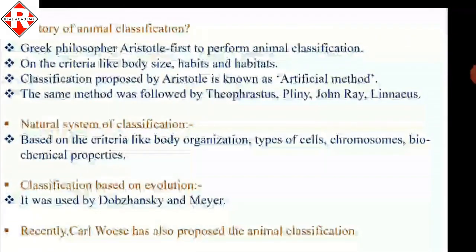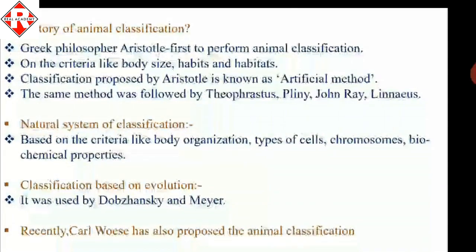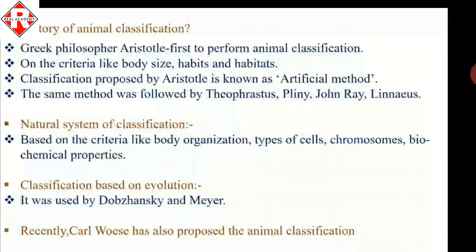Now let's recall the history of animal classification. The first person to classify animals was Aristotle, the great Greek philosopher, who used body size, habits, and habitats as criteria. This is known as the artificial method of classification, also used by Theophrastus, Pliny, John Ray, and Linnaeus. The natural system of classification uses body organization, type of cells, chromosomes, and biochemical properties.